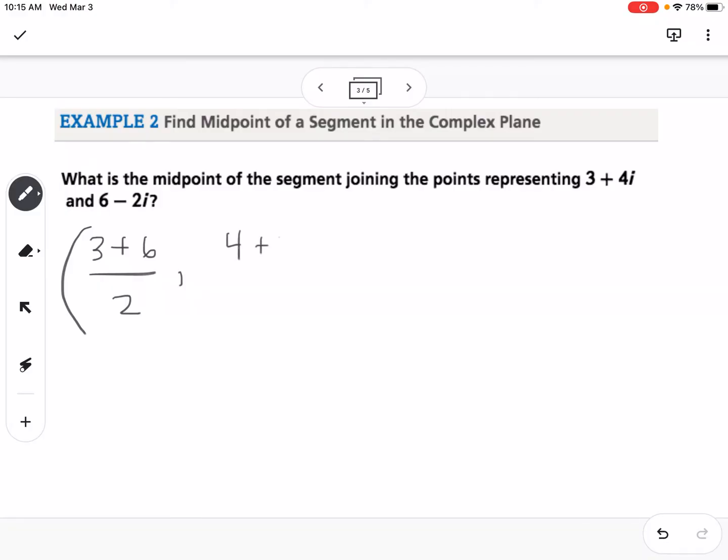So that would give us 9 over 2, which would be 4.5, and it would give us 2 over 2, which is 1. So what that represents is that our real part of our complex number is 4.5, the imaginary part is just 1. So this would be 4.5 plus i would be the midpoint between those two points.